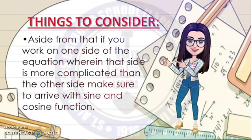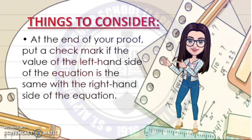Aside from that, if you're working on one side of the equation wherein that side is more complicated than the other side, make sure to arrive at the sine and cosine function. Lastly, class, at the end of your proof, put a checkmark if the value of the left-hand side of the equation is the same as the right-hand side. So for you to understand this better, let's proceed to the different examples.